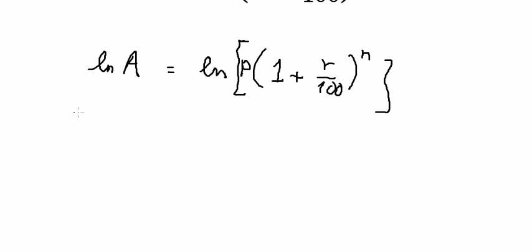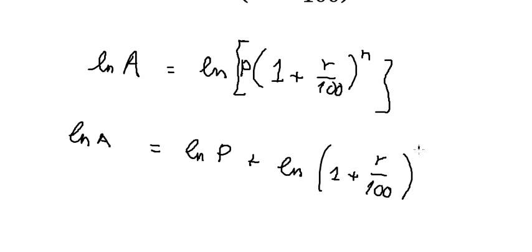Next, we have the formula here. Because these multiply together, we get Ln A equals Ln P plus Ln of 1 plus r over 100 to the power of n.